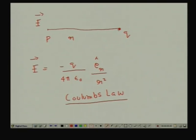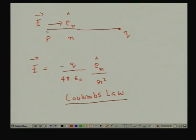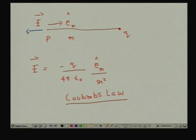Coulomb's law tells us that if a charge q is at rest, the electric field at a point P a distance r away is given by minus q over 4π ε₀ times ê_r, where ê_r is the unit vector pointing from point P to the position of the charge. The electric field points in the direction of ê_r but with a minus sign — so it is actually oppositely directed — and falls off as 1 over r squared.